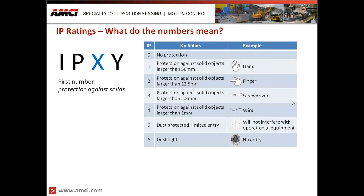Looking at the solid protection chart, the first number defines the protection against solids. The numbers start from zero and increase up to six, with each increasing number giving us protection from smaller and smaller objects, starting with no protection. If we select the number two, we're protecting against solid objects larger than 12.5 millimeters — roughly half an inch — which, as a practical example, would be a finger. Someone can't stick their finger inside that enclosure, damage the product, or get electrocuted.